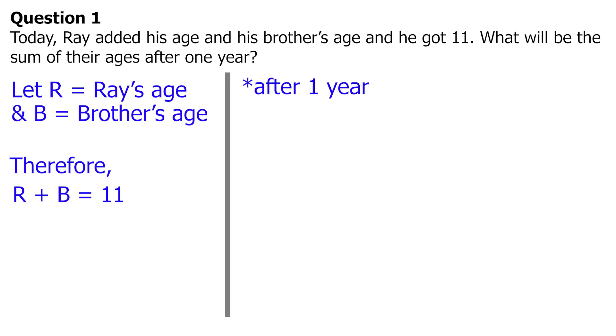After one year, both of their ages is increased by one, and we can now formulate the equation: the quantity R plus 1, plus the quantity B plus 1, equals their age after a year.